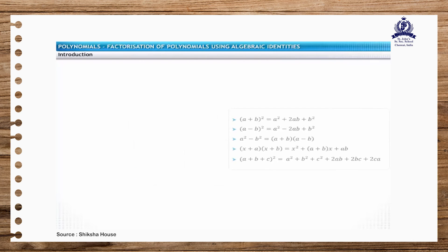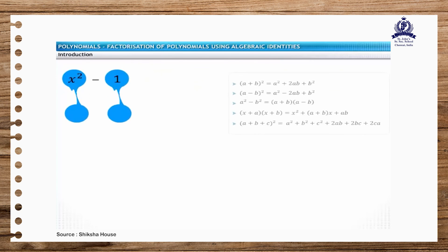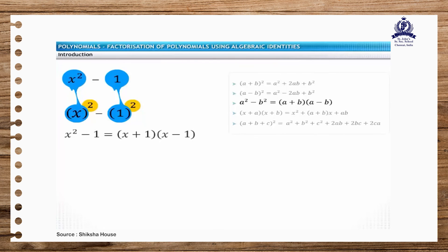For example, consider the quadratic polynomial x squared minus 1. Which of these identities can be applied to factorize this polynomial? This can be expressed as the difference of two squares. Hence, you can use this identity to factorize the quadratic polynomial. The obtained linear polynomials are the factors of the polynomial.